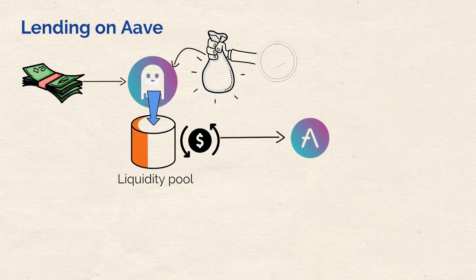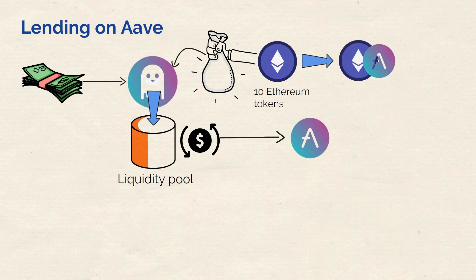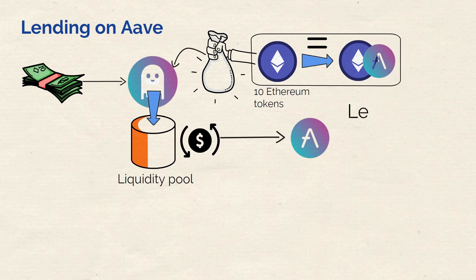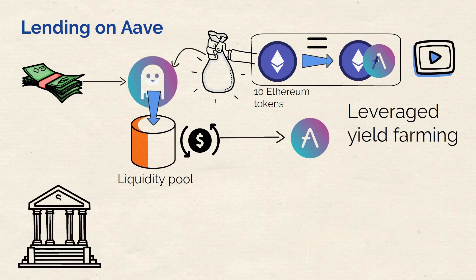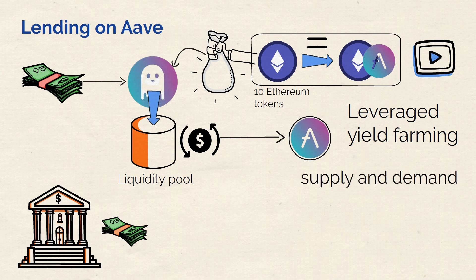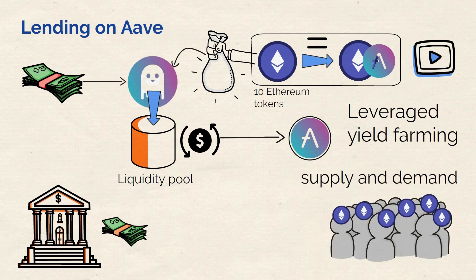For example, if you deposit 10 Ethereum tokens, you get 10 Aave Ethereum tokens. These tokens are worth just as much as normal Ethereum tokens, which means you can actually use them as collateral. Just like a bank pays you interest on your savings, Aave pays you interest through your liquidity tokens. This interest rate varies according to supply and demand, so if many people are already depositing Ethereum tokens, you'll get a lower return, but vice versa also applies.